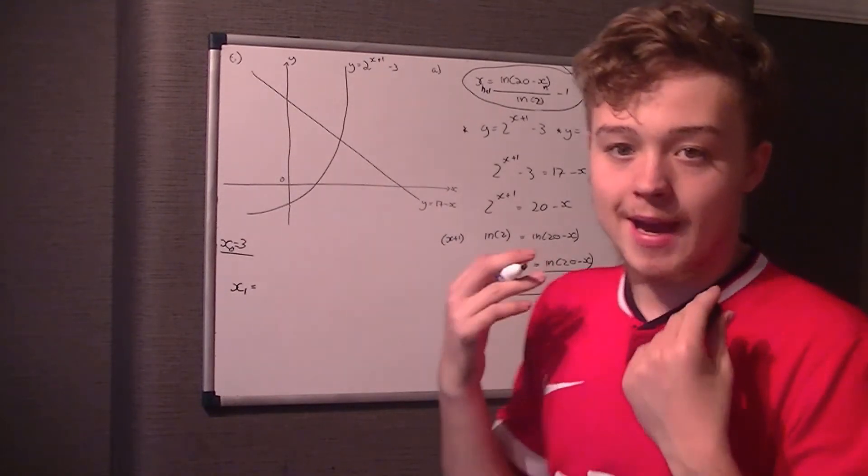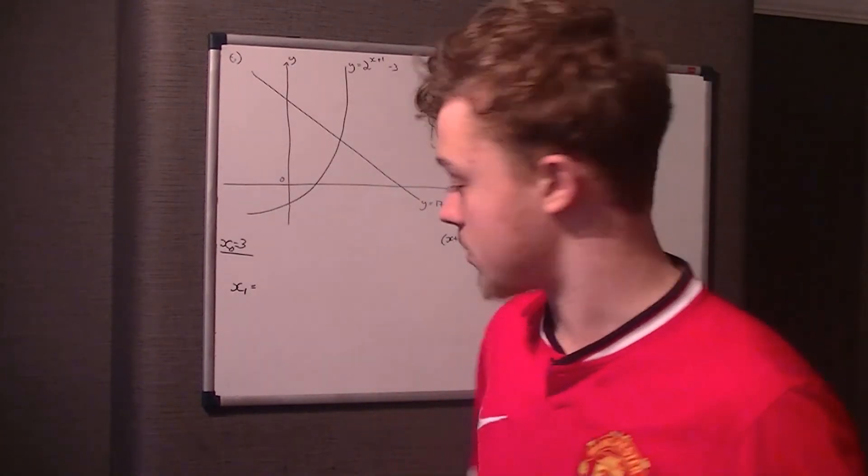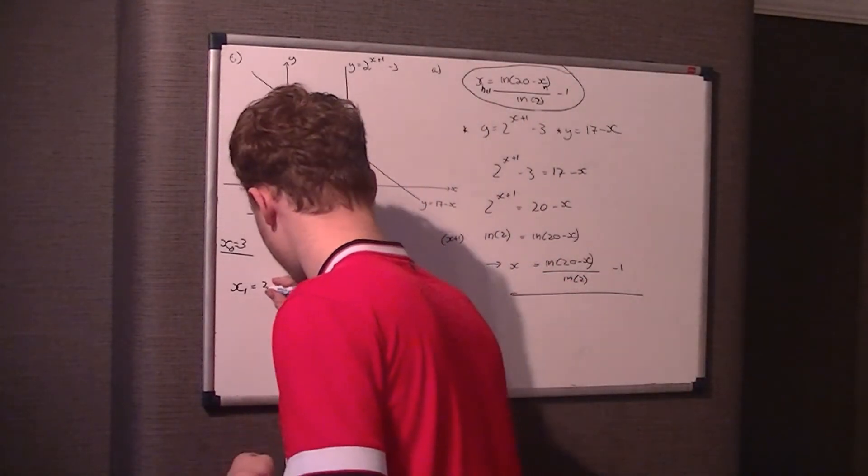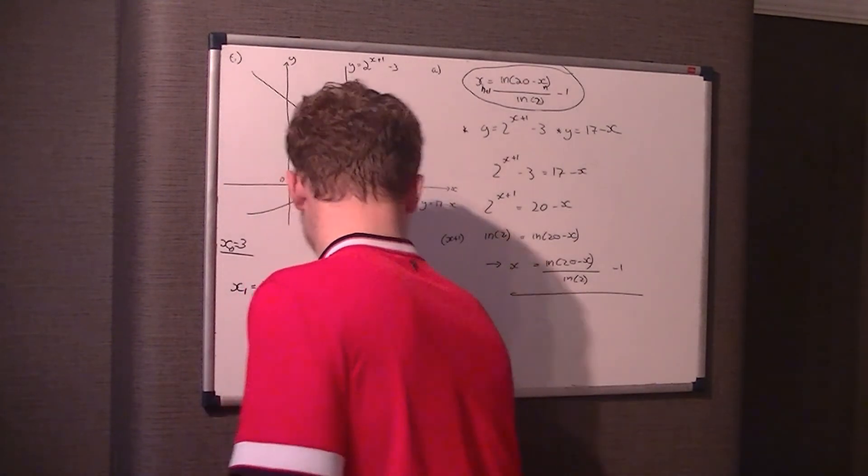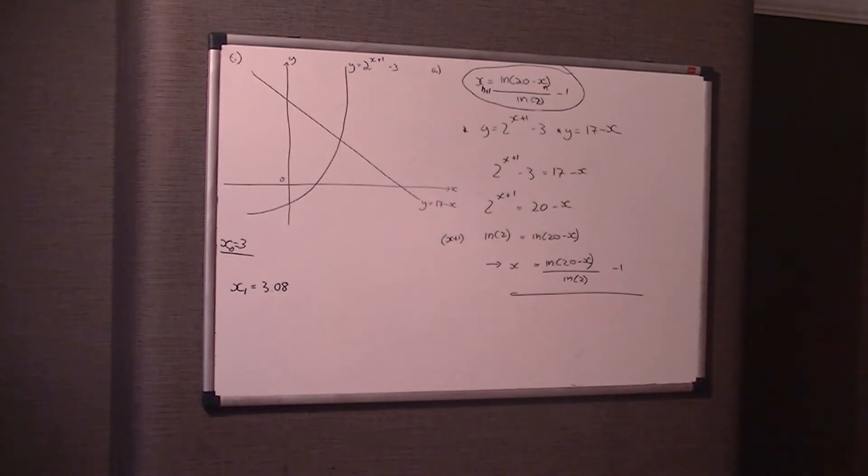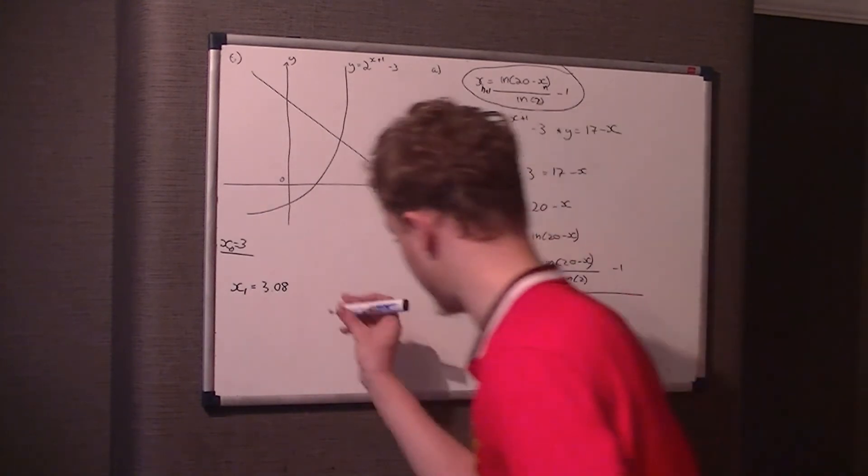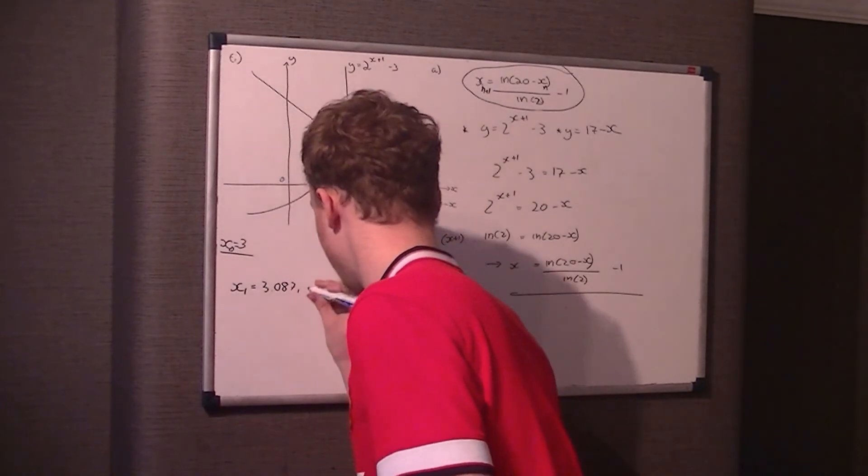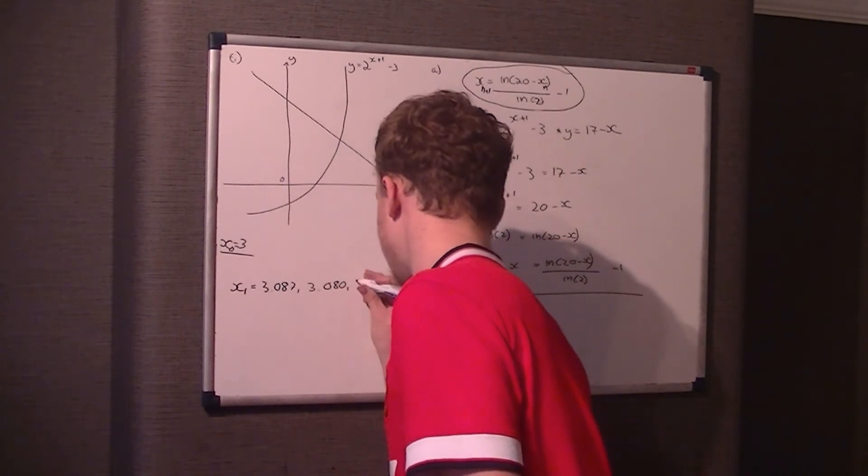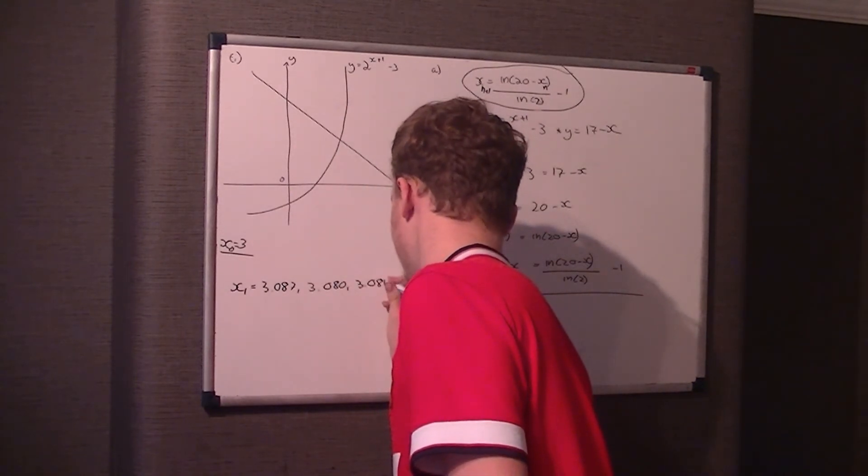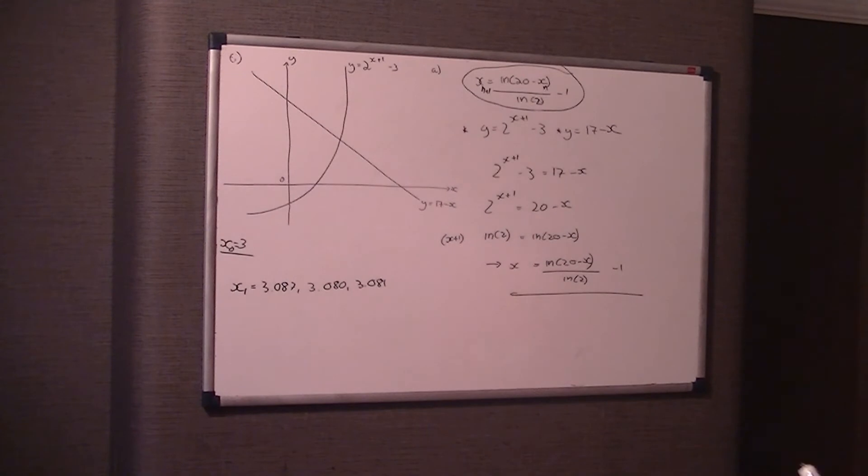So what this is asking you to do is to round it to three decimal places. So the first one is 3.087, I think it is. It's 3.087. Good memory. And then it's 3.080, and then it's 3.081. Okay, so that's part B.